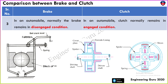Third point: in an automobile, the brake is normally not in contact under normal conditions. Whenever the brake is applied, it comes into contact with the drum. In an automobile, the clutch normally remains in the engaged condition. So the basic difference is: brake remains in disengaged condition and clutch remains in engaged condition.